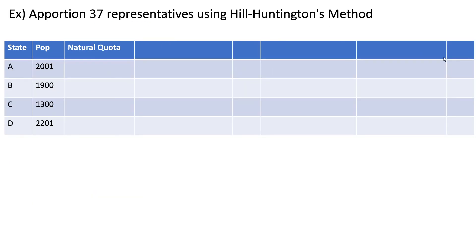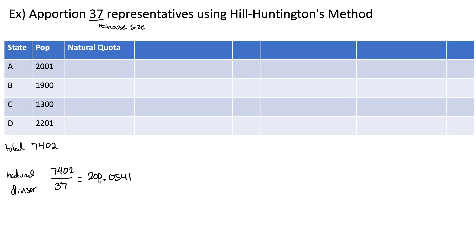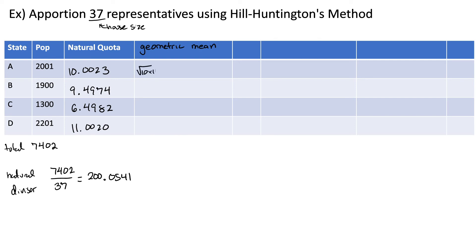Now we'll look at another example using Hill-Huntington's method and see what happens if our initial allocation ends up being too large. The house size is 37. We find our total population, then calculate our natural divisor, and use it to calculate the natural state quotas by dividing each state population by the natural divisor. Now that we have our natural state quotas, we calculate the geometric mean for each one: for a natural quota of 10.0 we take the square root of 10 times 11, and we calculate the remaining geometric means similarly.